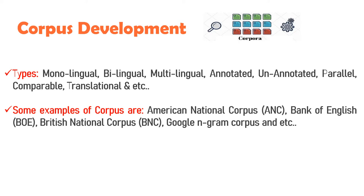Annotation corpus involves data about data. Tagging is the process by which material in the corpus is marked or coded to make it in a searchable form. Some examples of corpora are American National Corpus, Bank of English, British National Corpus, and Google Ngram Corpus.